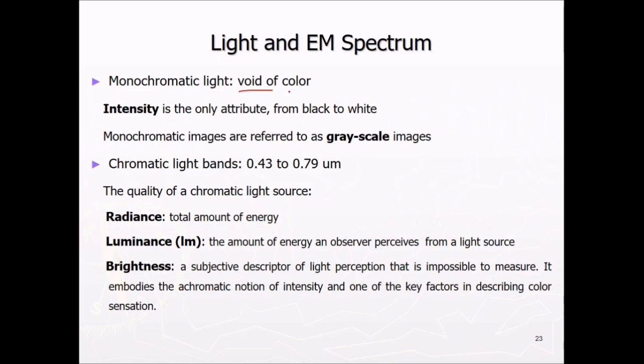And we have monochromatic light that is void of color. Intensity is the only attribute in this monochromatic light from black to white. And monochromatic images are also referred to grayscale images. You don't have any color. And the only thing is the intensity. For our purposes, we'll use it to 0 to 255. And these are chromatic light bands from 0.43 to 0.79. The quality of chromatic light sources can be radiance, luminance and brightness. Radiance is the total amount of energy. Luminance is the amount of energy an observer perceived from the light source. And the brightness is the subjective descriptor of light perception that is impossible to measure. It embodies the chromatic notion of intensity and one of the key factors in describing color sensation.